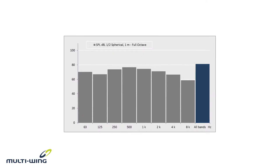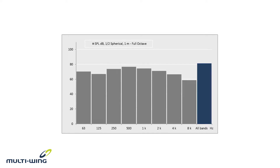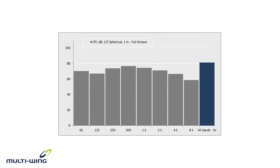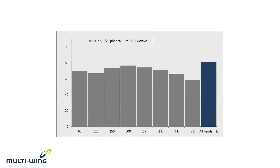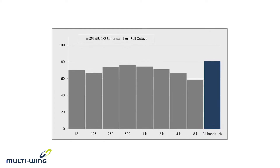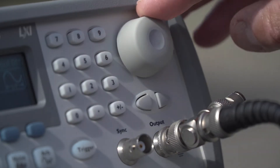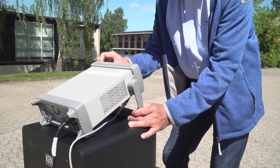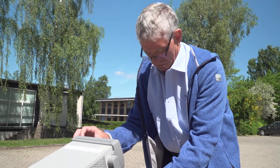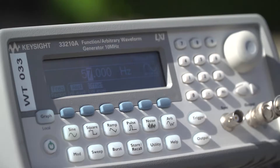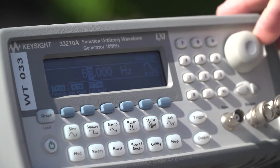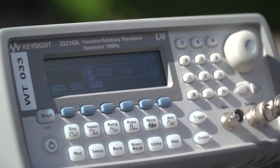The noise coming from a fan is typically broadband noise. We generally represent this by octave bands — 8 in all — ranging from 63 Hz to 8 kHz. The experiment will let you see that there are large differences in the way these frequencies behave. Let's start out with the lowest band represented by the central frequency, 63 Hz.